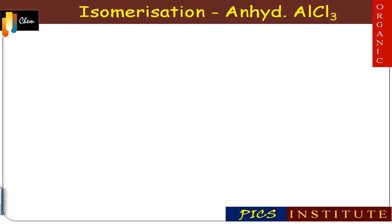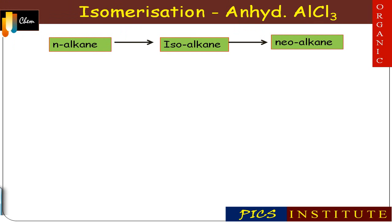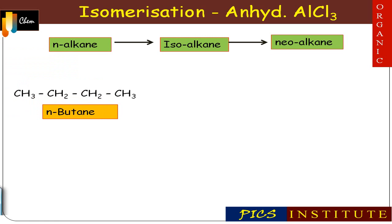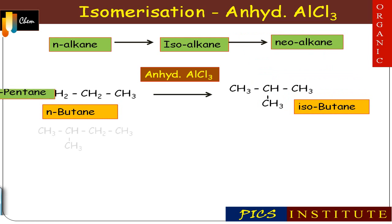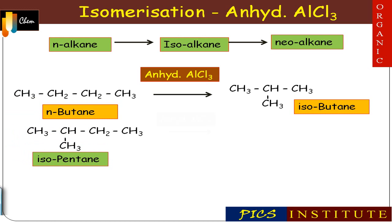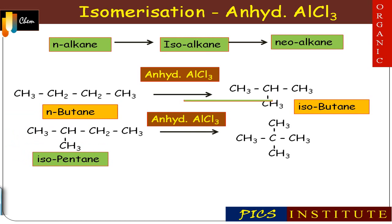Isomerization — action of anhydrous AlCl3 on alkanes: normal alkanes form isoalkanes, and isoalkanes form neoalkanes. For example, n-butane on reaction with anhydrous AlCl3 forms isobutane. If the reactant is an isocompound, for example isopentane, then it forms neopentane. If anhydrous AlCl3 is present in excess, then n-alkane directly forms neoalkane.